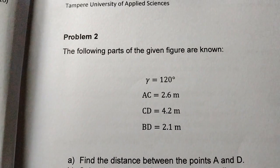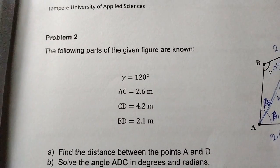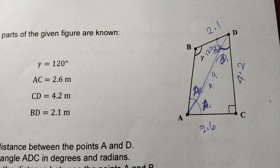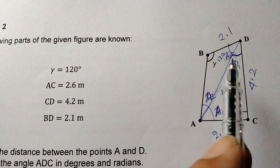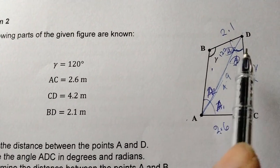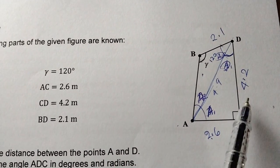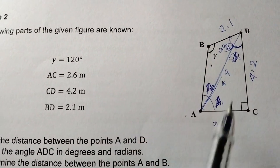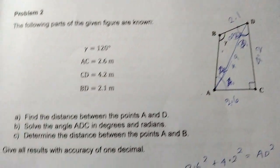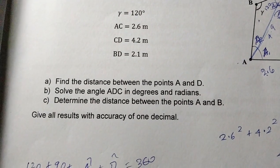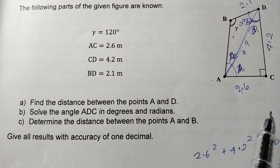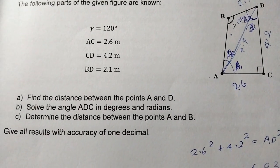The following parts of the given figure are known. Find the distance between point A and D — the area of distance. Solve the angle ADC. ADC is the angle, given in degrees and radians.